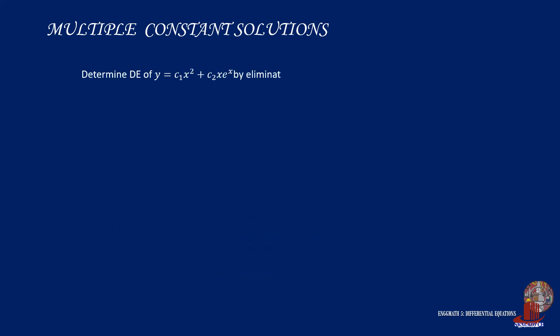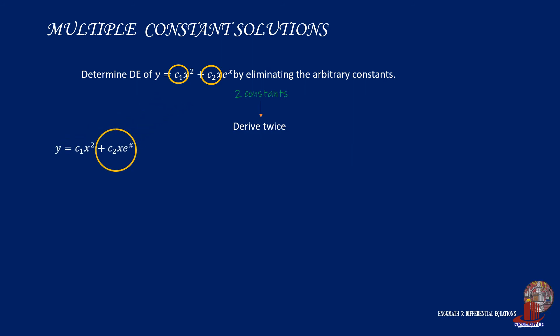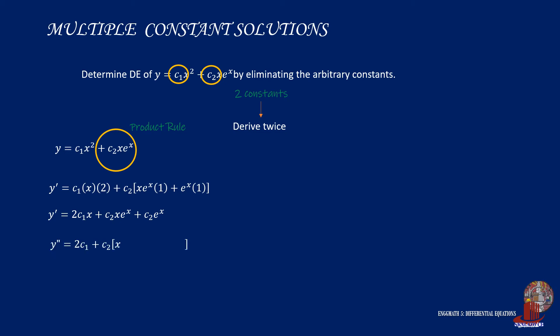The third example is slightly more complicated than the previous one. With the appearance of c1 and c2, there would be two derivations involved. From the original equation, we take y', but the second term requires the product rule, so y' would then have three terms. By simplifying, we get y' is equal to 2 times c1 times x plus c2 times x times e raised to x plus c2 times e raised to x.